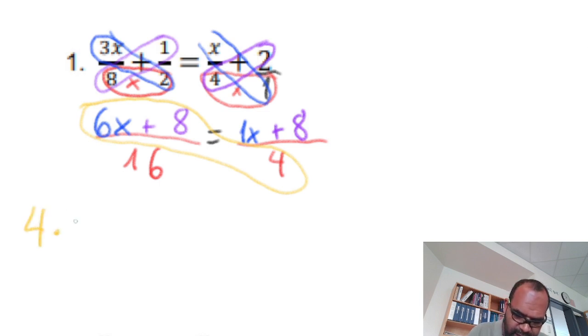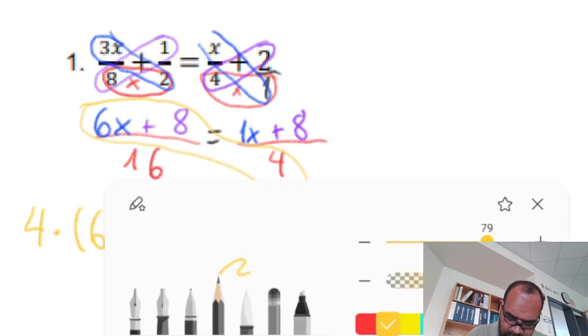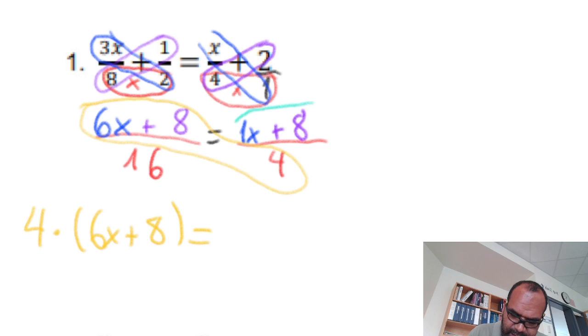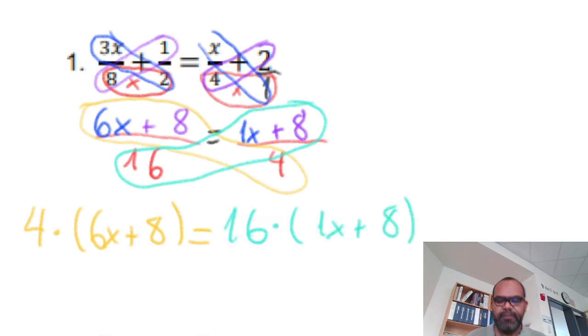4 times 6x plus 8 equals. Let's see the other side. Let me use this one. The other side is 1x plus 8 times 16. It is 16 times 1x plus 8. Great.